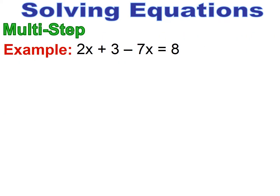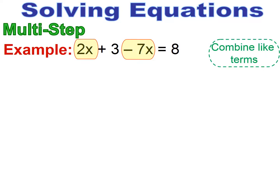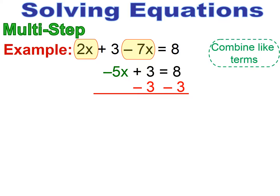Here we have an example. We see we have like terms — same variables on the same side of the equal sign — so I simply combine like terms. I have positive 2x minus 7x. Different signs mean I subtract and keep the sign of the higher number, so I end up with negative 5x, and I bring down the plus 3 equals 8. Now I have a two-step equation: I subtract 3 from both sides, then divide both sides by negative 5, and I get x equals negative 1.